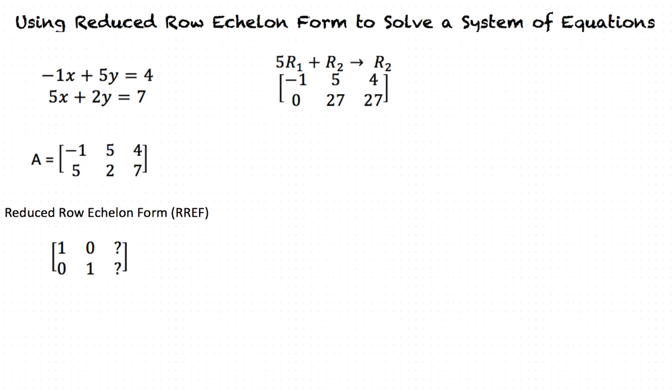This results in negative 1, 5, 4, row 2: 0, 27, 27.